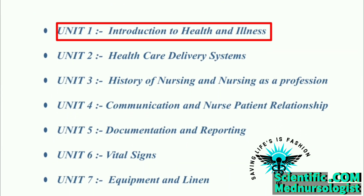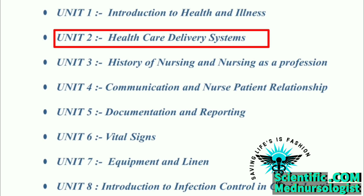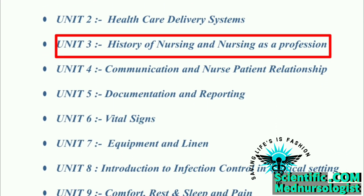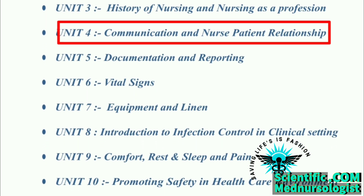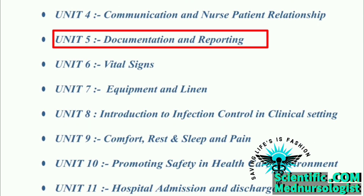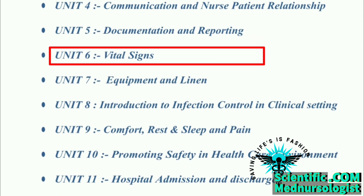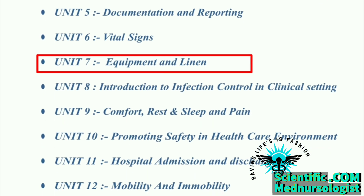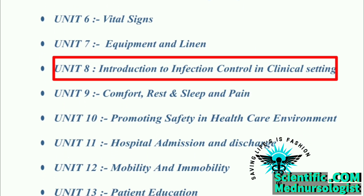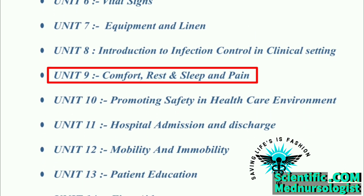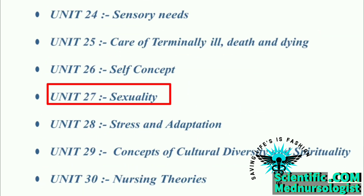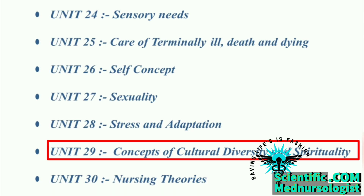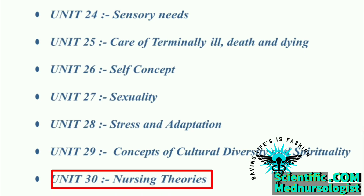The 30 units include: Unit 1 Introduction to Health and Illness, Unit 2 Healthcare Delivery System, Unit 3 History of Nursing and Nursing Professional, Unit 4 Communication and Nurse-Patient Relationship, Unit 5 Documentation and Reporting, Unit 6 Vital Signs, Unit 7 Equipment and Linen, Unit 8 Introduction to Infection Control in Clinical Settings, Unit 9 Comfort Rest and Sleep, Unit 27 Self Concept, Unit 28 Sexuality, Unit 29 Concepts of Cultural Diversity and Spirituality, Unit 30 Nursing Theory.